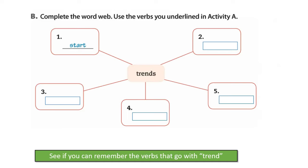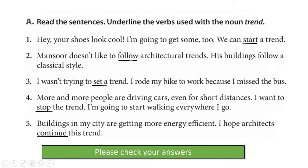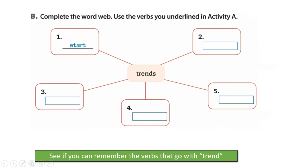And B: complete the word web using the verbs you underlined in activity A. So we're going to go back to activity A, where we have the words and verbs that we underlined, and we now have to put these words in the spaces. Can you remember any of them? One has been done for you — 'start trends'. Pause the video and have a go.